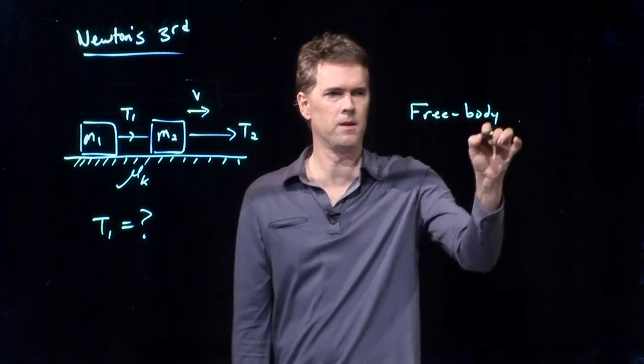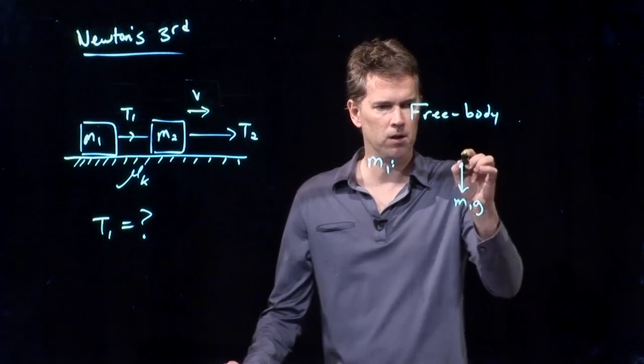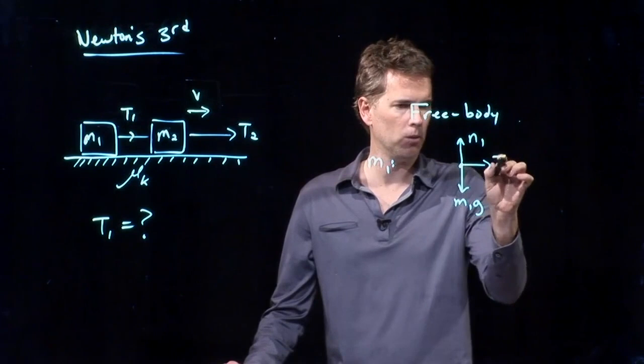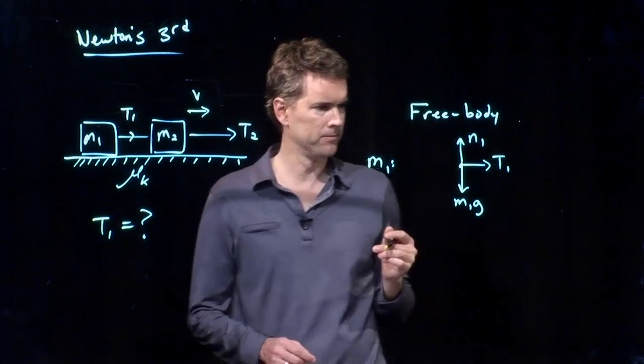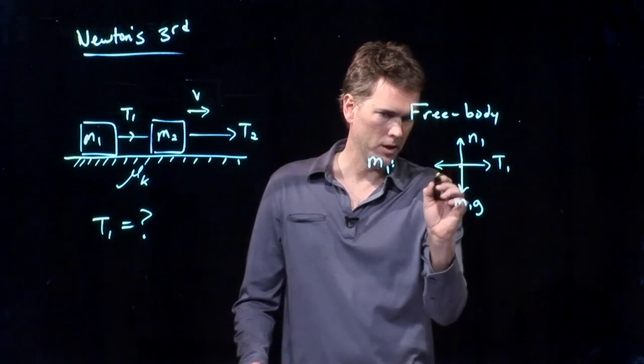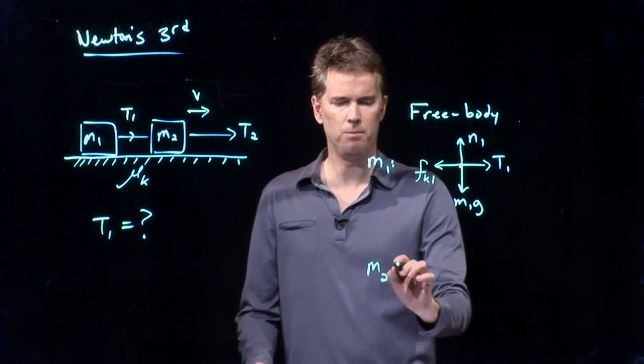All right, we go back to our free body and the free body for M1 looks like this. We've got M1G acting down, we've got N1 acting up, we have tension 1 acting to the right. What else do we have? Brandon, what else should I put here? Kinetic friction going to the left and we will call that FK1 kinetic friction acting on box 1. Perfect.